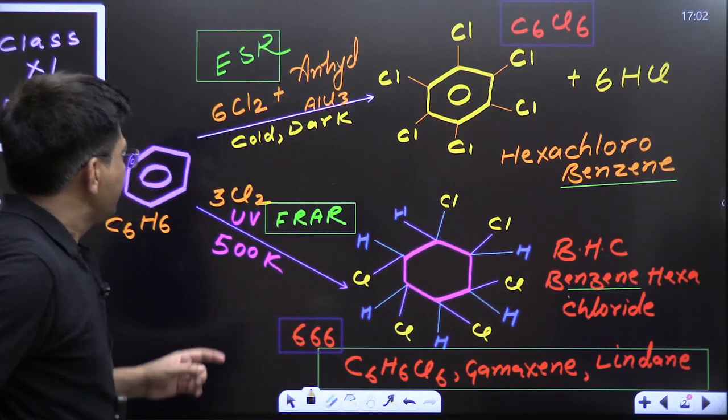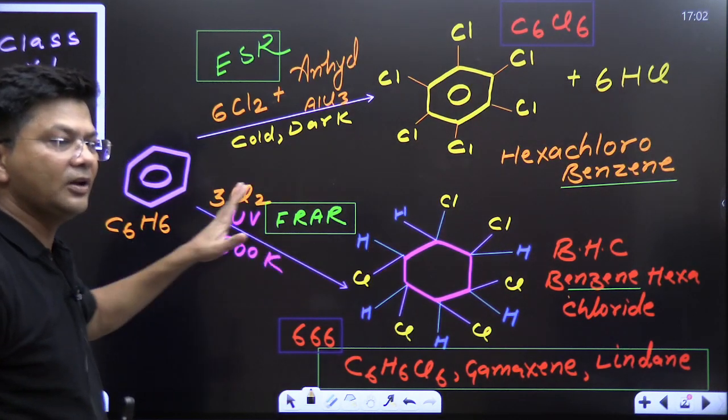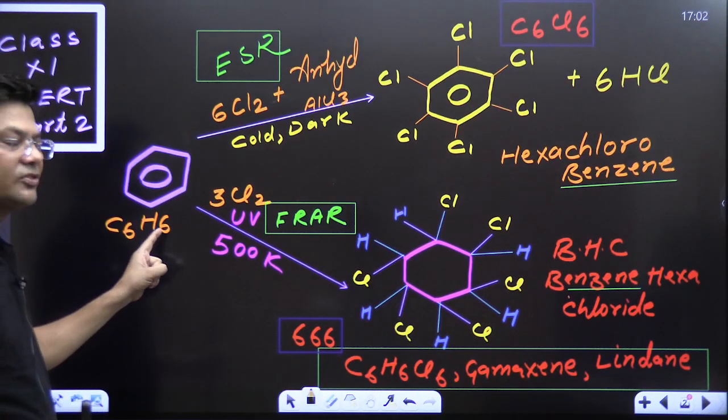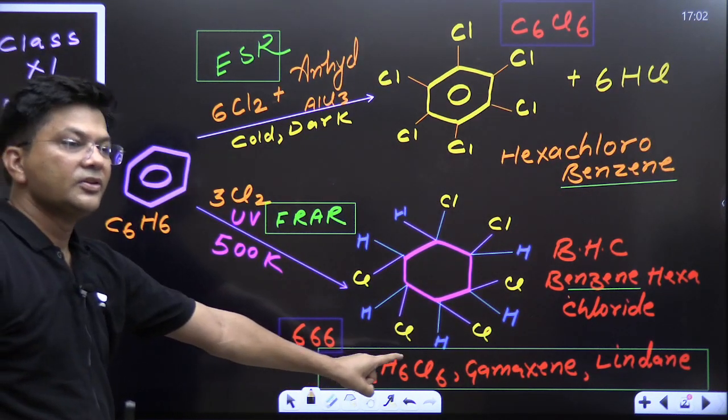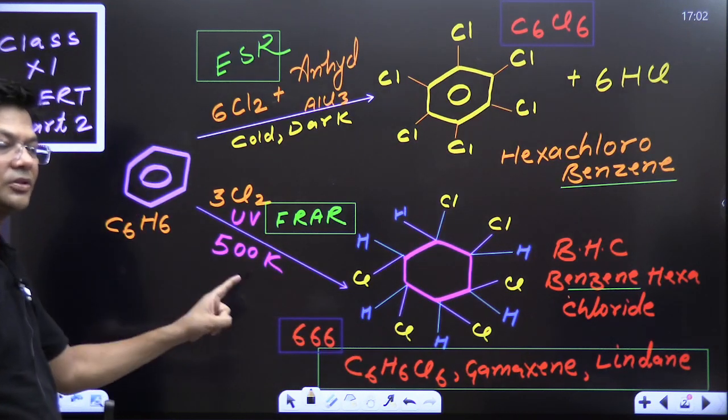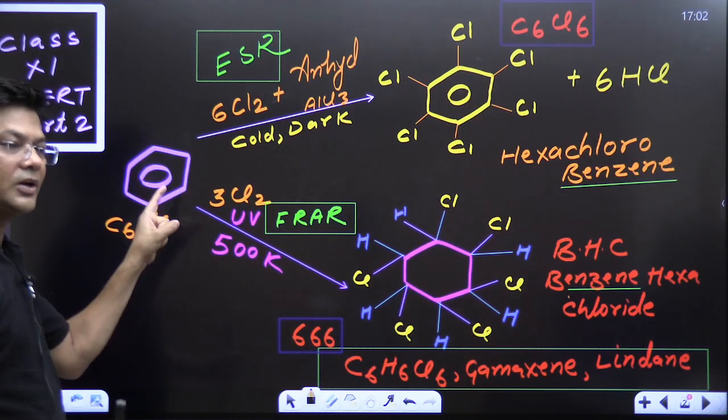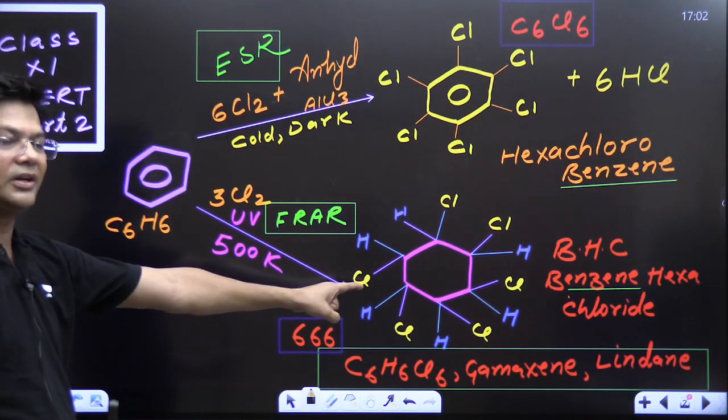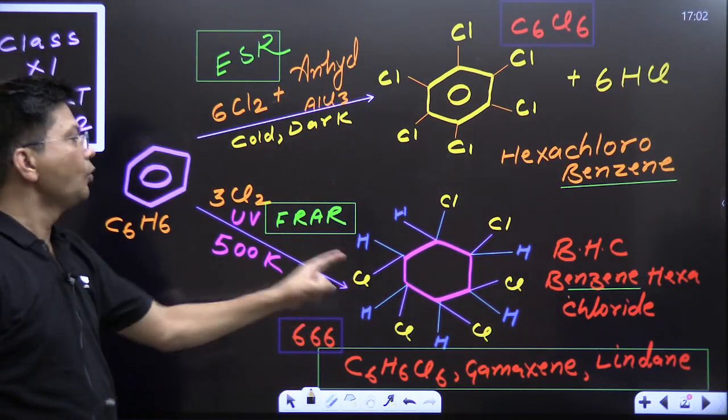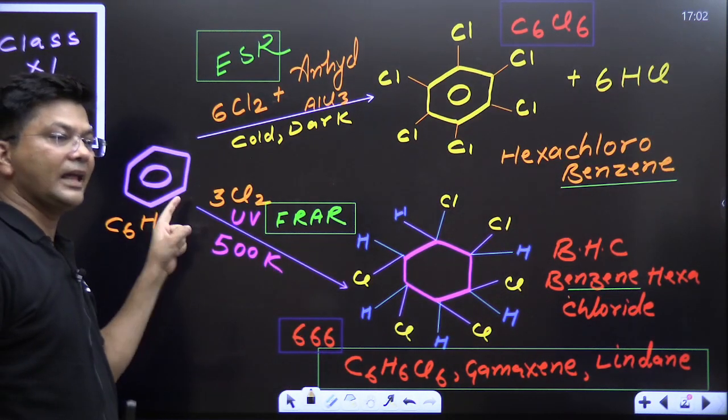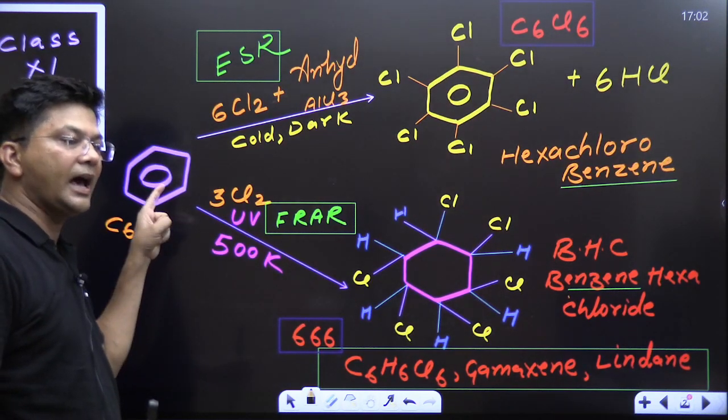Now, if you see the second reaction, its aromaticity has been lost. It was C6H6. Now this compound is C6H6Cl6. And this reaction, benzene's hydrogen are still with the benzene. But benzene has lost its aromaticity. It has gained six chlorine atoms. Just gain. That means something added. Some atoms are added. Six chlorine atoms are being added.